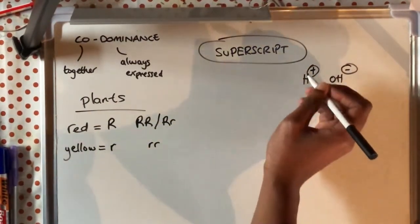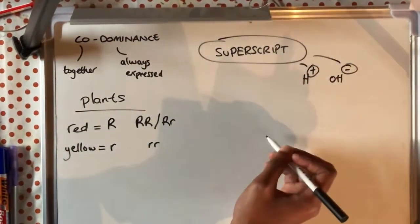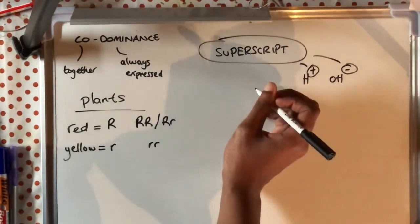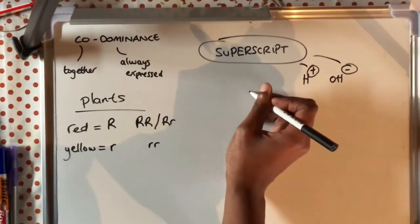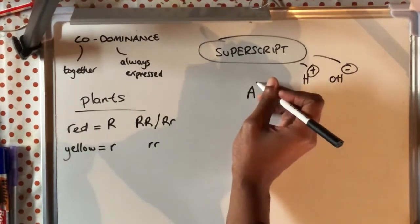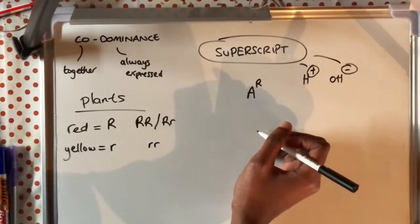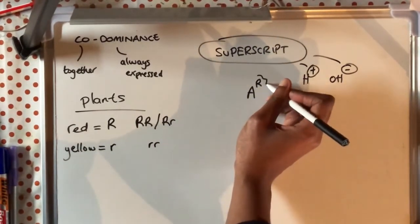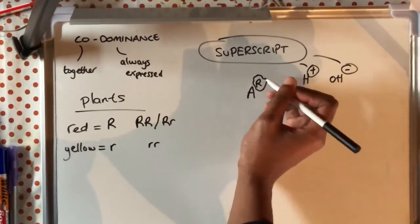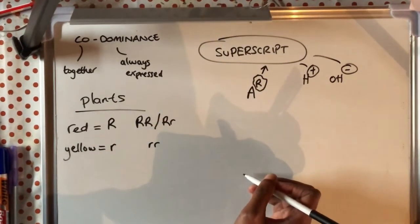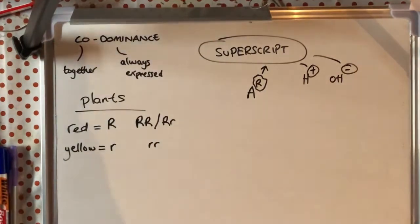So what we're saying here is that the superscript would be the positive charge that you put with H plus and the negative when you are drawing or writing OH minus. So how are we going to apply that to our co-dominance here?